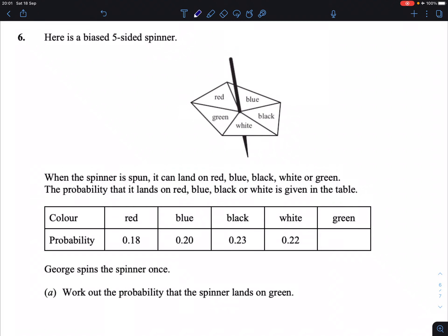Question 6. Here is a biased five-sided spinner. When the spinner is spun, it can land on any of the colors red, blue, black, white, or green.